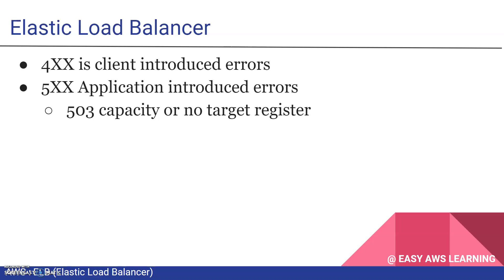For error codes: 4xx errors are introduced from the client side. 5xx errors are application-introduced errors — the application could be wrongly configured. 503 means capacity issue or no target group registered. You can use these error codes for troubleshooting. Also ensure your security group is properly configured in case of any access-related issue. This is all about load balancer fundamentals. In the next session we will configure Application Load Balancer and Network Load Balancer. Thank you.